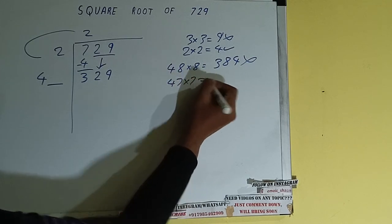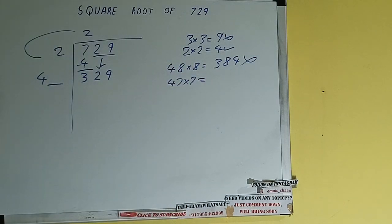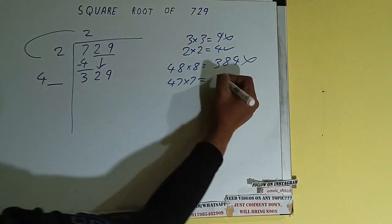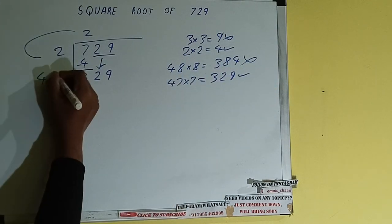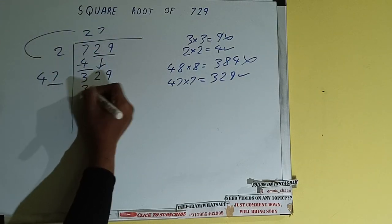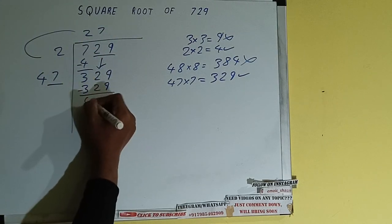Let's try 7 times. That is 47 into 7. It will be 329 which is good to take. So 7 here and 7 here. 329 subtract. 0 will be left.